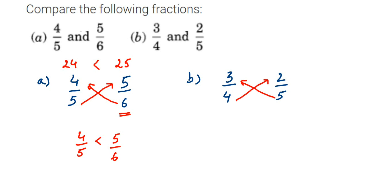So 3 times 5 is 15, 4 times 2 is 8. Which one is greater? 15 is greater, right? Which means 3/4 is greater than 2/5. So this was a simple one: cross multiply and check which one is greater or smaller.